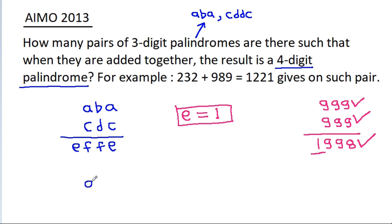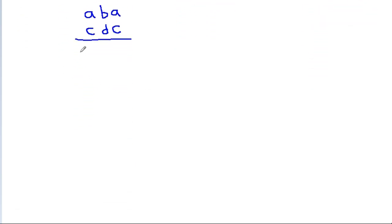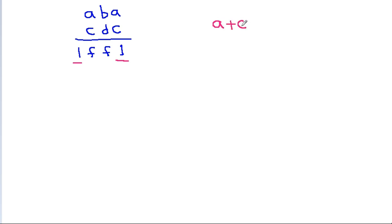So ABA plus CDC equals 1FF1. The unit digit of A plus C is 1, and the tens digit of A plus C is also 1. So A plus C must be equal to 11.